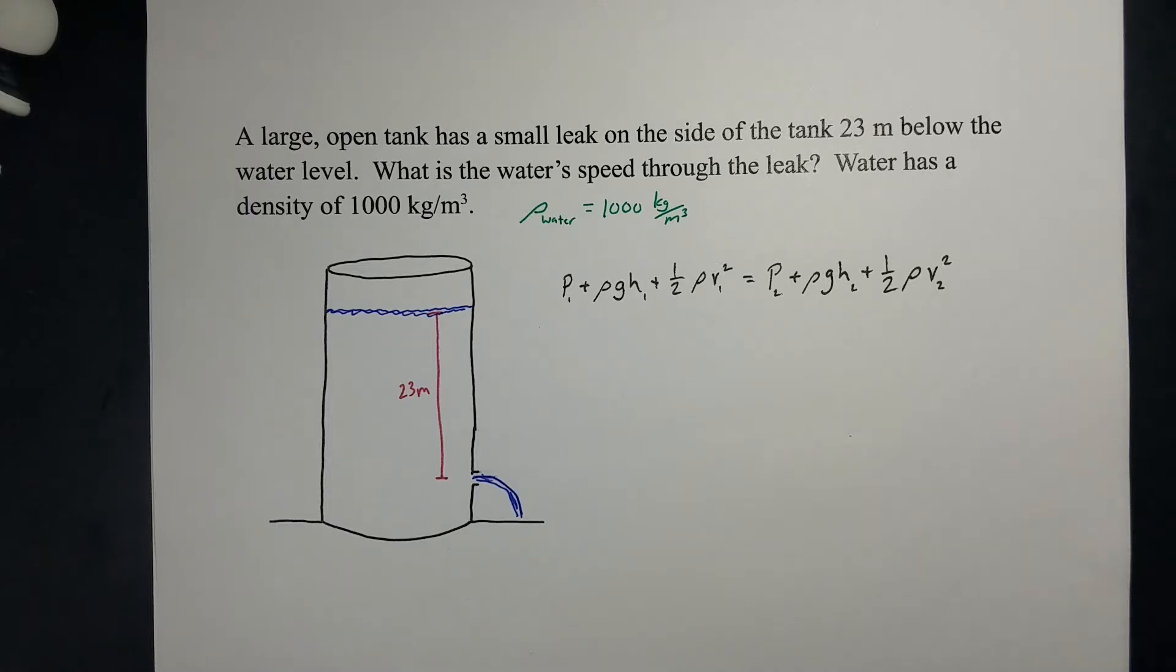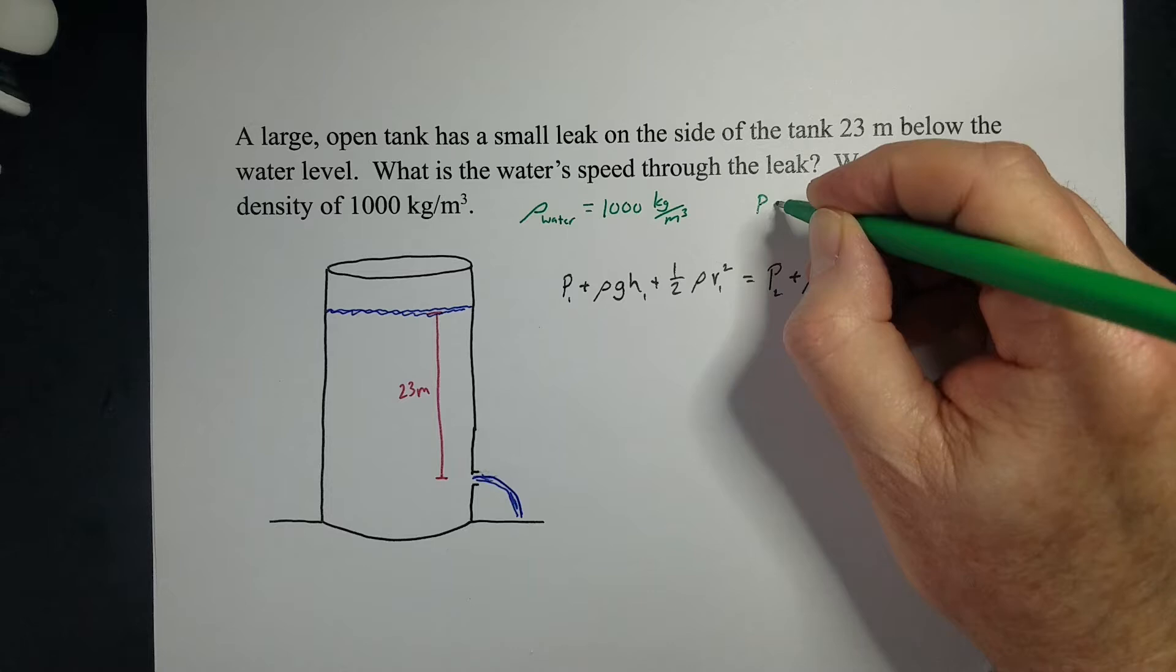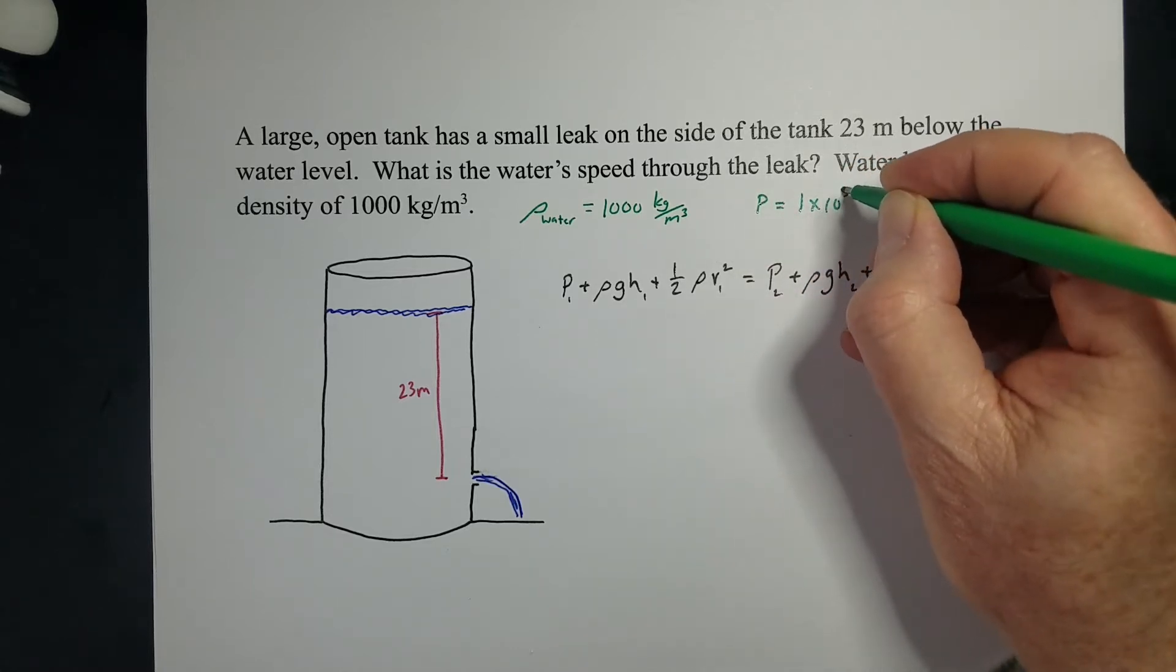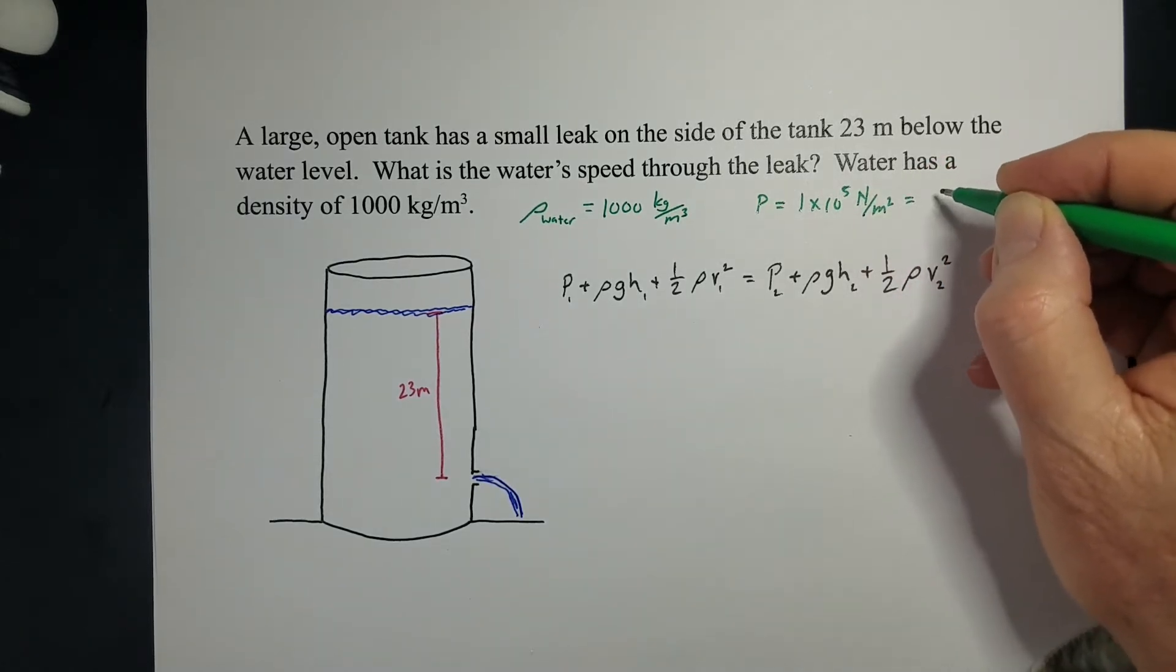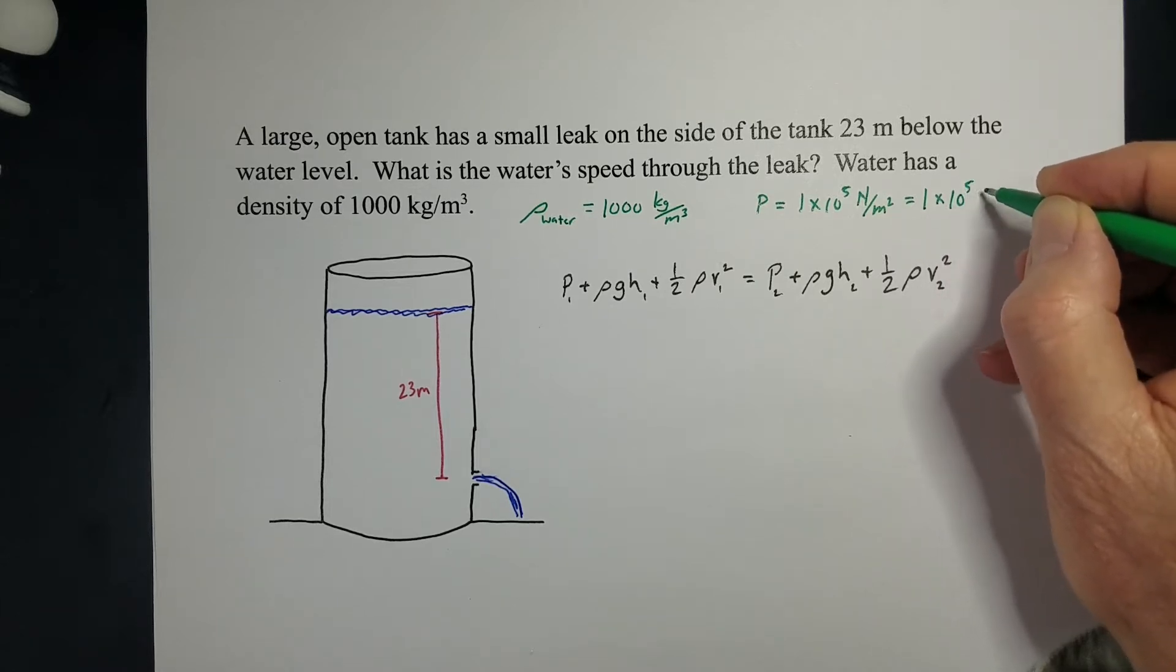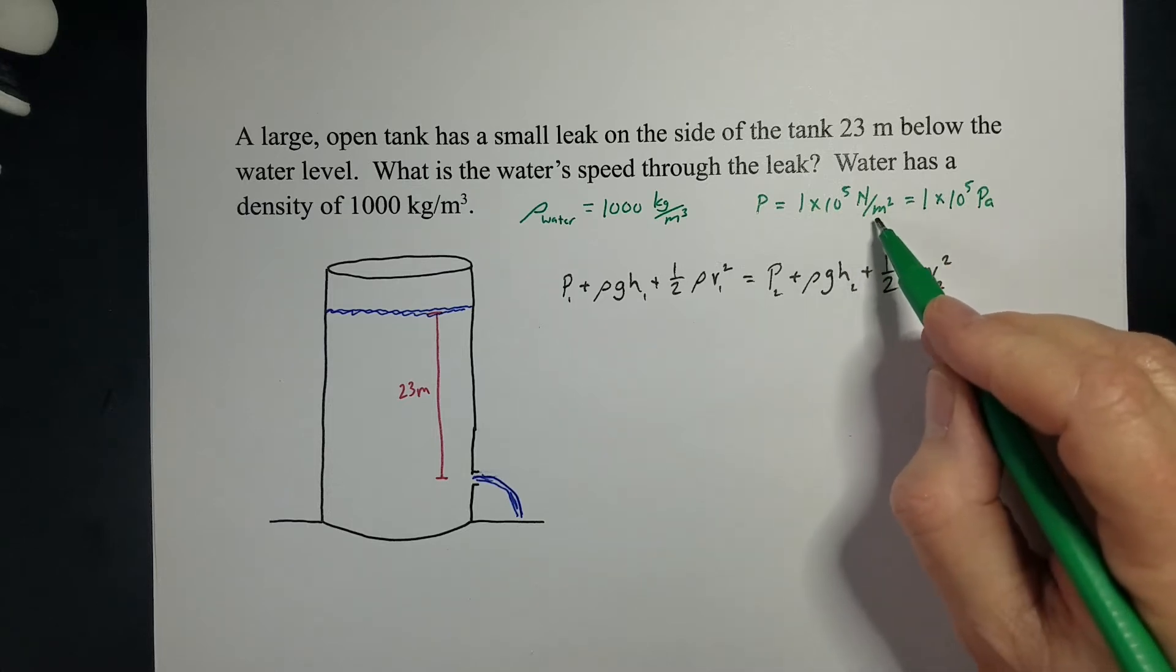We have atmospheric pressure, where the atmospheric pressure is 1 times 10 to the 5th newton per meter squared, or we have a fancy unit, 1 times 10 to the 5th pascals. So a pascal is a newton per meter squared.